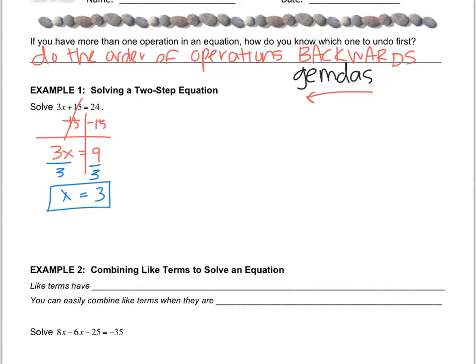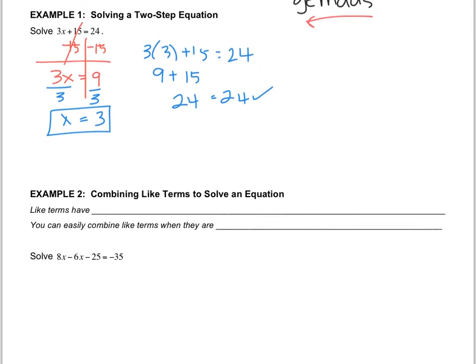Now it doesn't say to check but you should, so we're going to plug in 3 times 3 plus 15 and see if that equals 24. So 3 times 3 is 9 and then 9 plus 15 is 24. So I get 24 on both sides. So that was a multi-step equation that just had multiple operations to do.